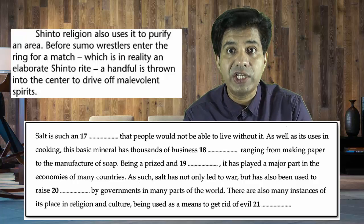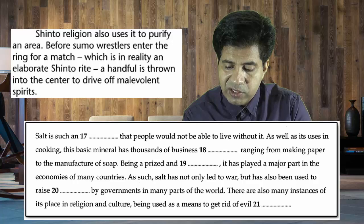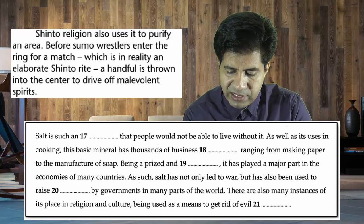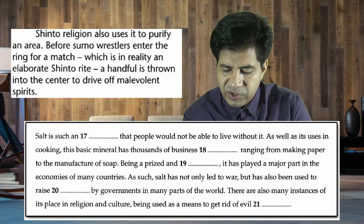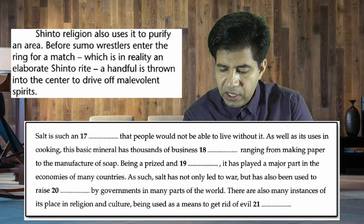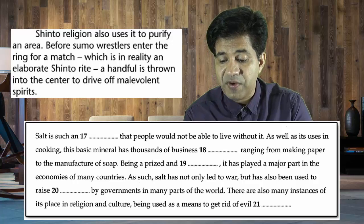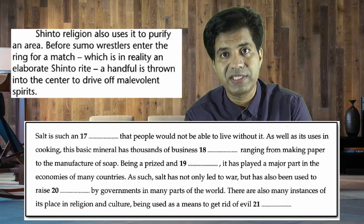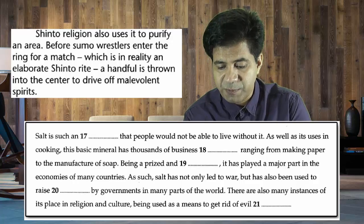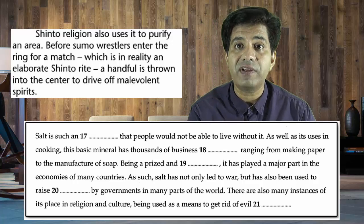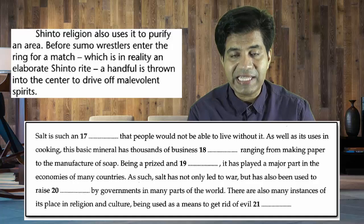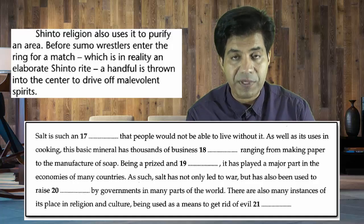I found it. It says: 'The Shinto religion also uses it to purify an area before sumo wrestlers enter the ring for a match, which is in reality an elaborate Shinto rite. A handful of salt is thrown into the center to drive off malevolent spirits.' Malevolent means bad, so 'malevolent spirits' equals 'evil spirits.' The answer is 'spirits.'